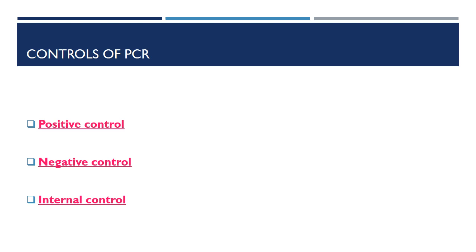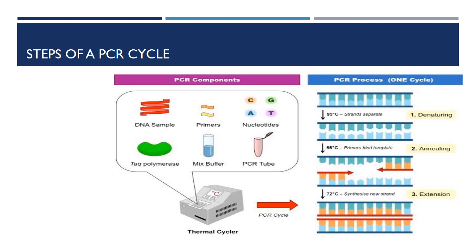Steps of a PCR cycle. The amplification program consists of a specified number of cycles divided into steps during which the samples are held at particular temperatures for designated times. The temperature determines the reactions that occur, and changing the temperature changes the reaction. The first step is denaturation. PCR starts with one double-stranded DNA target. The double-stranded DNA is denatured into two single strands in order to be replicated. This is accomplished by heating the sample at 94°C to 96°C for several seconds to several minutes, depending on the template. The initial denaturation step is lengthened for genomic or other large DNA templates; subsequent denaturation steps can be shorter.